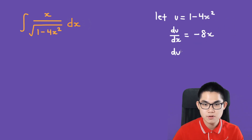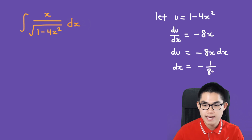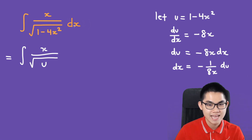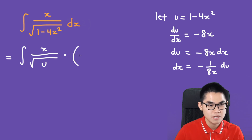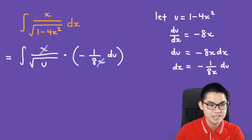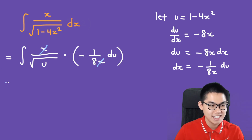So du is equal to negative 8x dx, and then dx is negative 1 over 8x du. We have the integral of x over the square root of u, then dx is negative 1 over 8x du. As you can see, the x will cancel out, and you can move the negative 1 over 8 outside of the integral because it's only a constant.